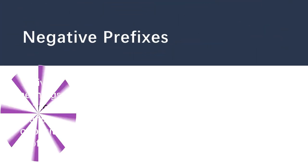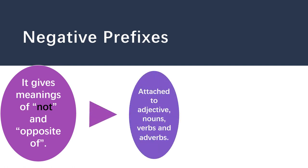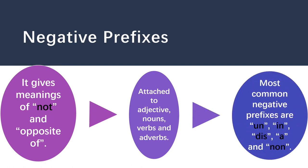The prefixes which give a negative meaning are called negative prefixes. This means if you use that prefix, you will get the meaning of 'not' or the opposite of something. These negative prefixes mostly attach to adjectives, nouns, verbs, and adverbs. The most common negative prefixes are: un, il, ir, im, in, dis, a, and non.